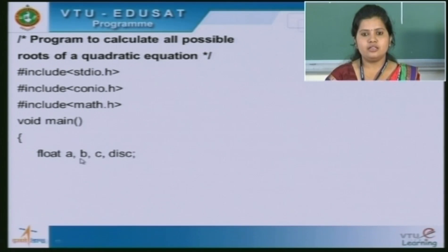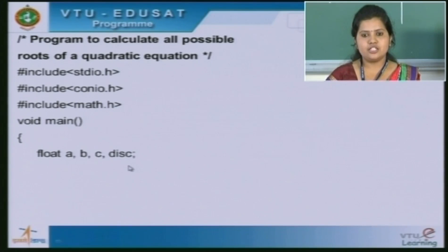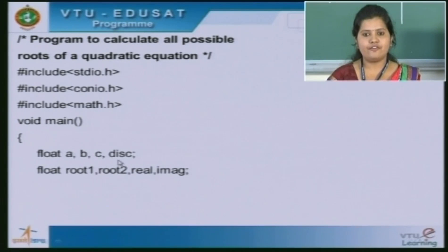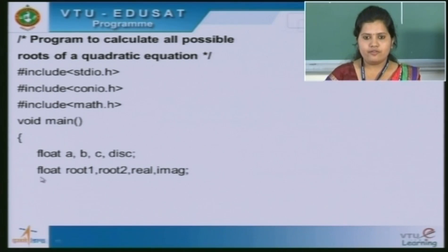Inside the main function, the first part includes the declaration part. This line is called the declaration of a variable. It consists of a data type name and variable names. Float is a data type. We also have other data types such as integer, char and double. Here, a, b and c are the input variables and disk is a variable used to compute the discriminant value. Root 1, root 2, real and imaginary are the output variables.